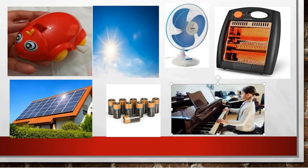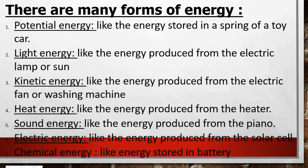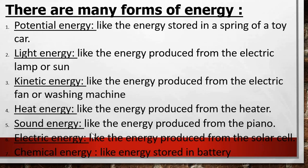We can summarize the forms of energy as follows: number one, potential energy — like energy stored in a spring of a toy car; number two, light energy — like energy from the electric lamp or Sun; number three, kinetic energy — like from an electric fan or washing machine; number four, heat energy — like from a heater; number five, sound energy — like from a piano; number six, electric energy — like from a solar cell; and number seven, chemical energy — like energy stored in a battery or dry cell. Study this and we will continue in the next video.